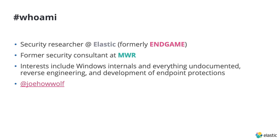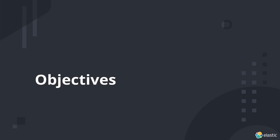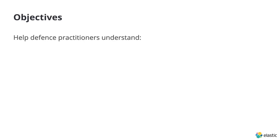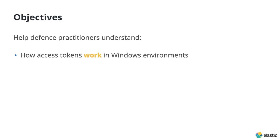My research interests generally cover everything to do with low-level Windows internals. My objectives for today are threefold. Firstly, I want to help defense practitioners understand how access tokens work in Windows environments. Access tokens are intimately related to a number of other key concepts in Windows security, and if you ignore those relationships, you only get a surface-level understanding. So my definition of access tokens and access token manipulation is perhaps far broader than you might be expecting.